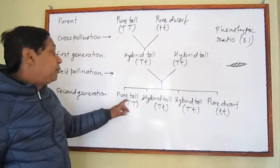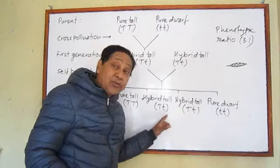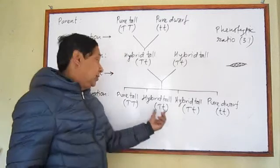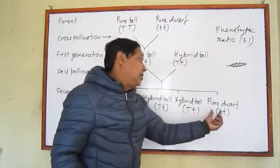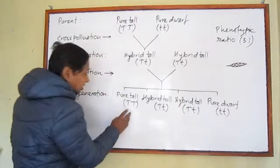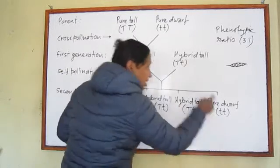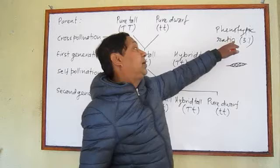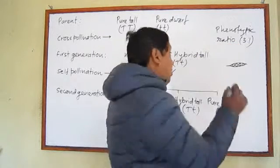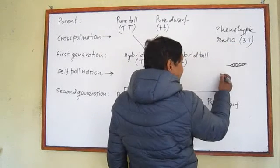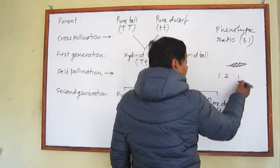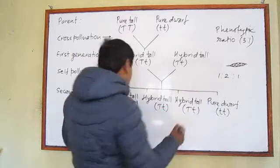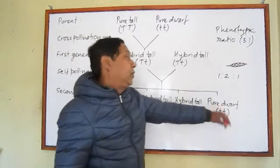This is called a homozygous or pure type. The heterozygous type appears tall but genetically is not pure — this is called a hybrid. So in the second generation there are three different genotypes: TT (pure tall), Tt (hybrid tall), and tt (pure dwarf). The genotypic ratio is 1:2:1 — pure tall to hybrid tall to pure dwarf.